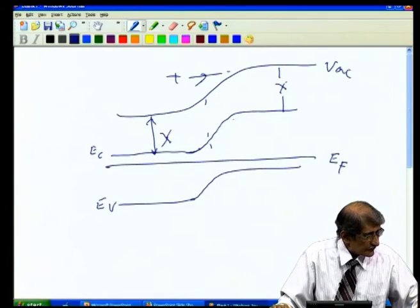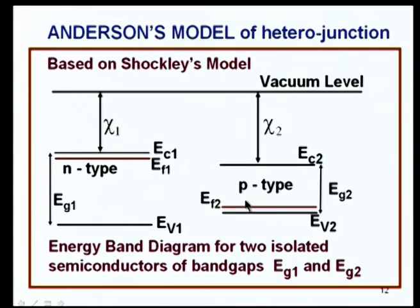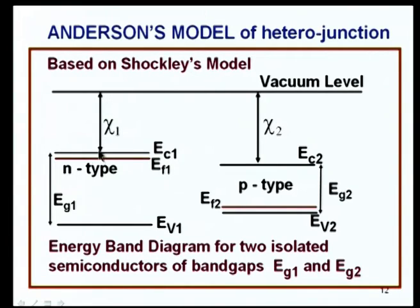In a heterojunction, the same principles apply but the band gap of material 1 (E_g1) is wider than that of material 2 (E_g2), and the electron affinity χ1 is smaller than χ2. This is the basic Anderson's model, which holds to a certain level of understanding. The Fermi level is higher in the wider band gap material, and when joined, the vacuum level bends continuously as in the homo junction.